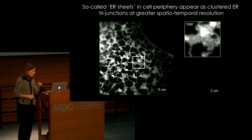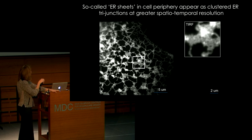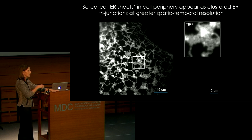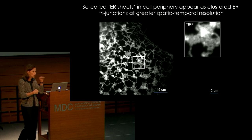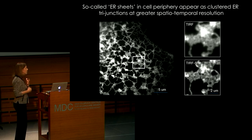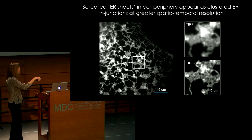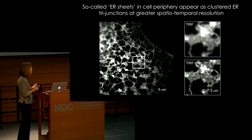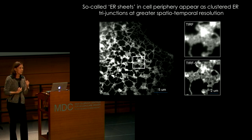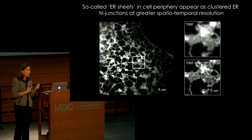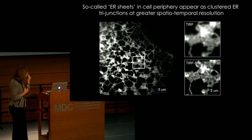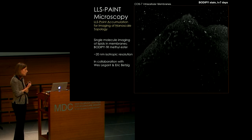If you look at the ER using conventional confocal imaging techniques, especially at the periphery, you frequently see structures that have been described as flat ER sheets. But in fact, when we look at these structures at higher spatial or temporal resolution, we see that they actually represent clusters of tubular reticular elements that have been drawn together. We just haven't been able to see them because we haven't collected images quickly enough or at high enough resolution.